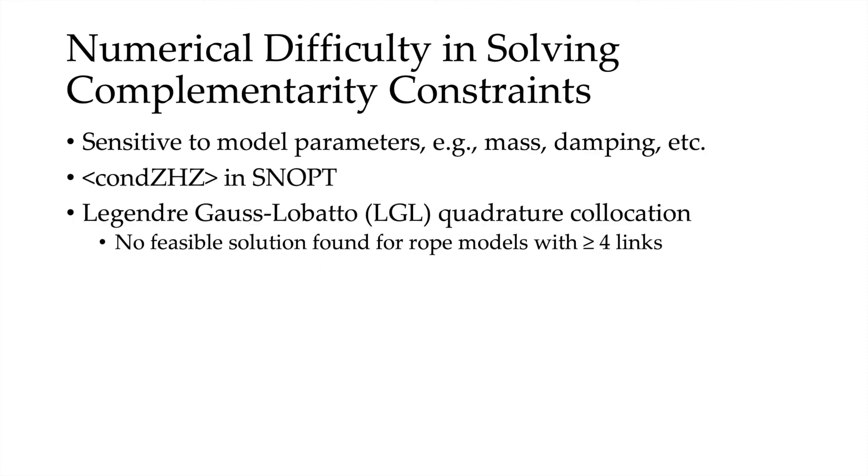I also noticed that my optimization program has been very sensitive to model parameters. If I change the damping, sometimes SNOPT would no longer be able to find feasible solutions. Conditioning number has been very high in SNOPT. Sometimes it can reach 10 to the power of 10. I also implemented LGL quadrature collocation in Python with Drake. However, I could not make SNOPT find feasible solutions for rope models with four or more links.